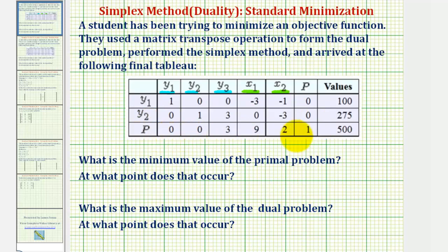So looking at our last row here, notice that P is active. We say P is active because this column contains only a one and zeros, which means P equals 500. This means the minimum value of the primal problem is 500, which is also the maximum value of the dual problem.